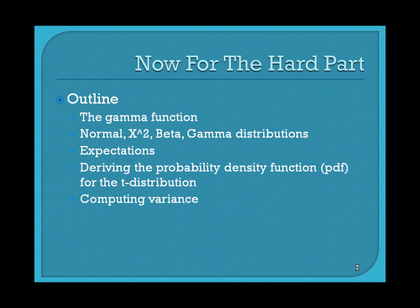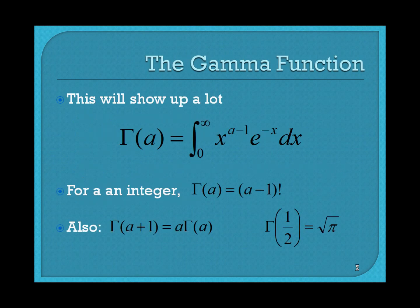For this second video, I'm going to be talking about a function called the gamma function. The gamma function of a, capital Gamma of a, is defined as the integral of x to the a minus one power times e to the negative x dx, integrating from zero to infinity. One of the cool things is that if a is an integer, you can do an integration by parts type thing, pulling out factors of a, a minus one, a minus two, a minus three — and it turns out that for a being a positive integer, Gamma(a) equals a minus one factorial.